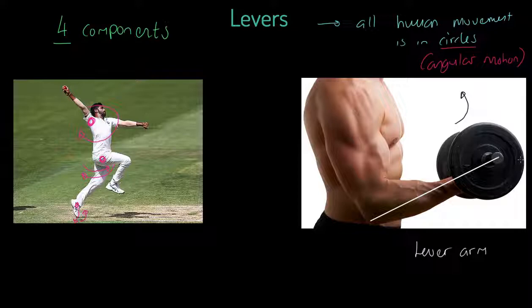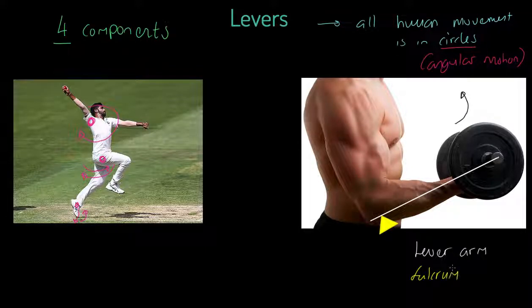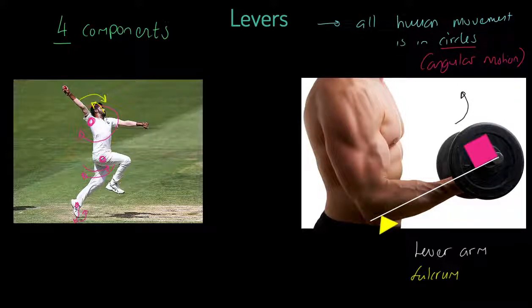The first component we must have is a lever arm. We sometimes call it a lever bar, but it's called a lever arm. It's effectively a solid rod. In this case, it's actually the radius in the forearm. We've got a lever arm, a bone, a long bone. What else do we need? We need to have some kind of pivot point or fulcrum. Here it's the elbow joint. And of course, we have a load. In this case, we've got the dumbbell. This is called a load or a resistance.